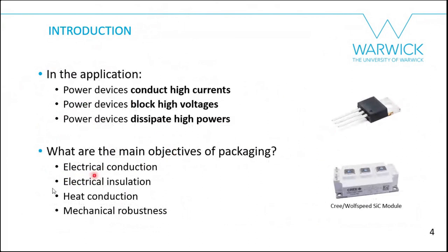In the application, power devices have to conduct high currents, block high voltages, and hence they dissipate high powers. The main objectives of packaging a power device are: good electrical conduction, good electrical insulation, good heat conduction, and mechanical robustness. Your device is going to get hot so you want to be able to remove that heat. You have high voltages and you want to isolate properly, and you don't want your package to break easily.